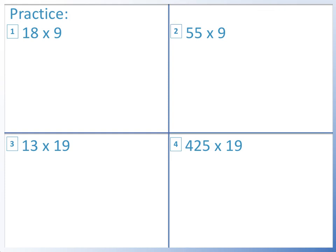Here are some practice questions for you to try. Please pause the video and have a go. Question 1: 18 times 9. We multiply 18 by 10, which gives us 180. We then take away 18 from 180. This gives us 162.